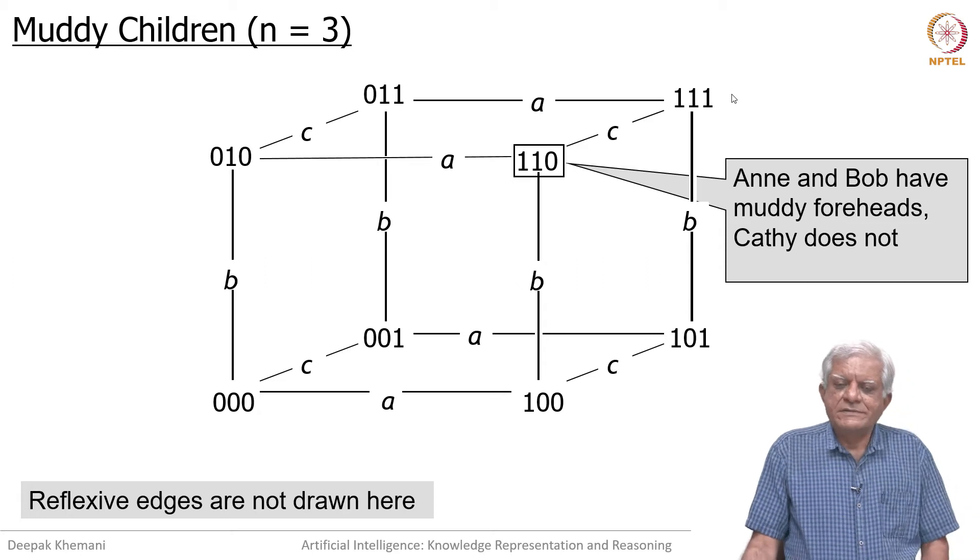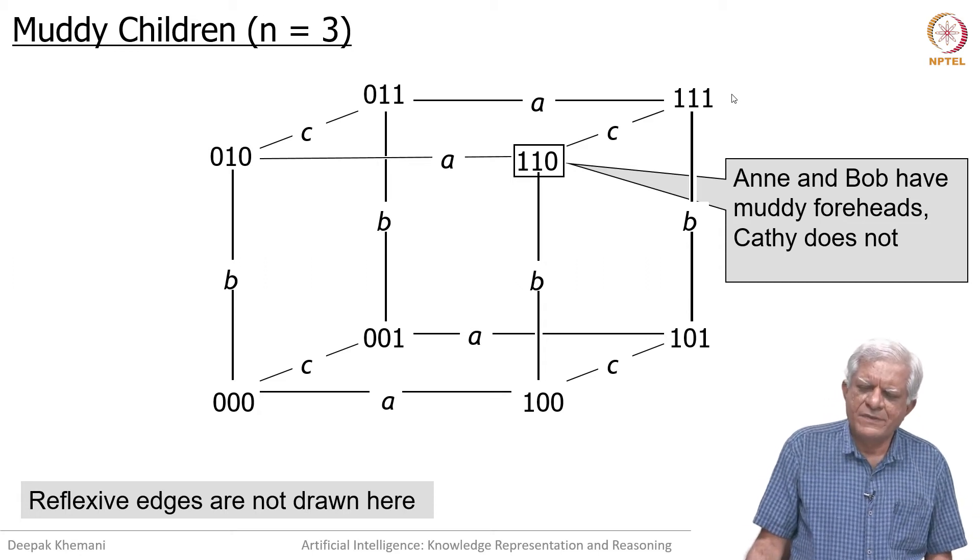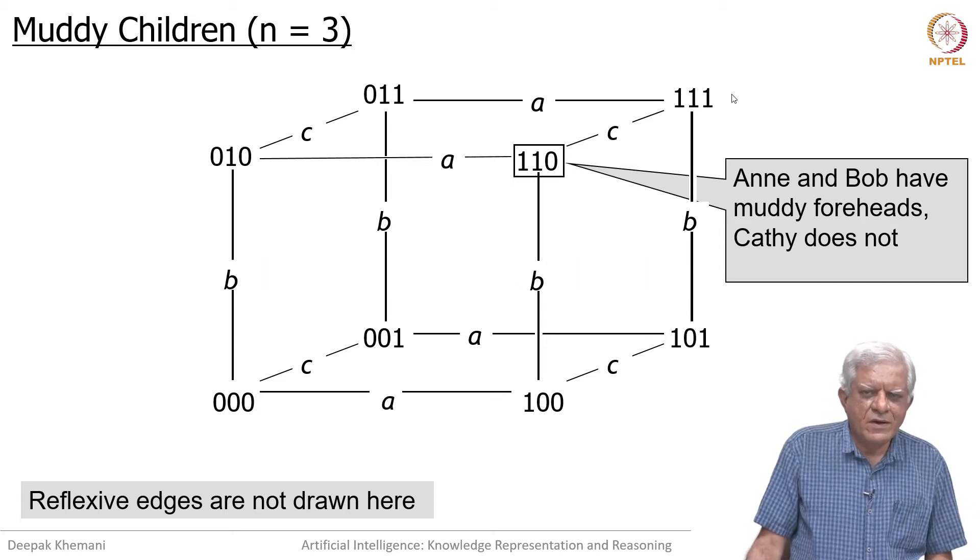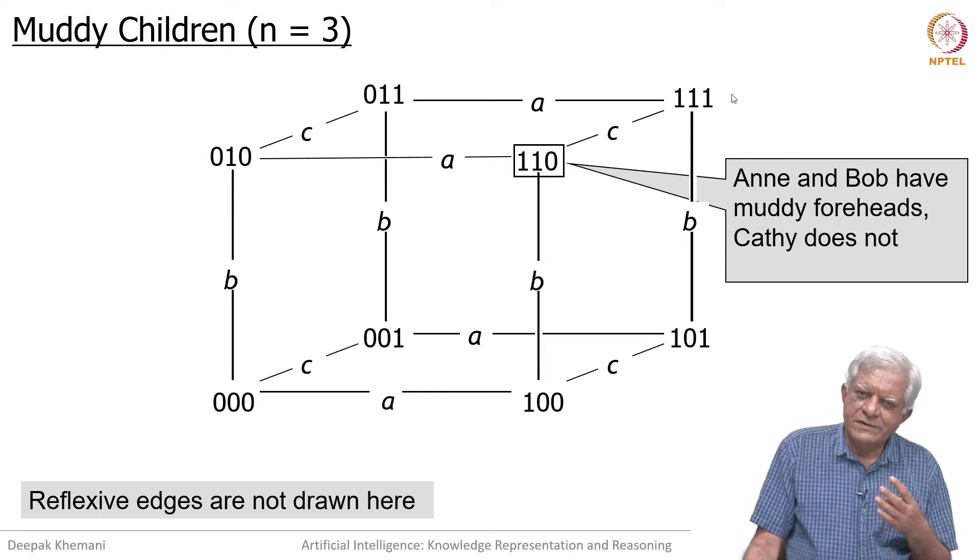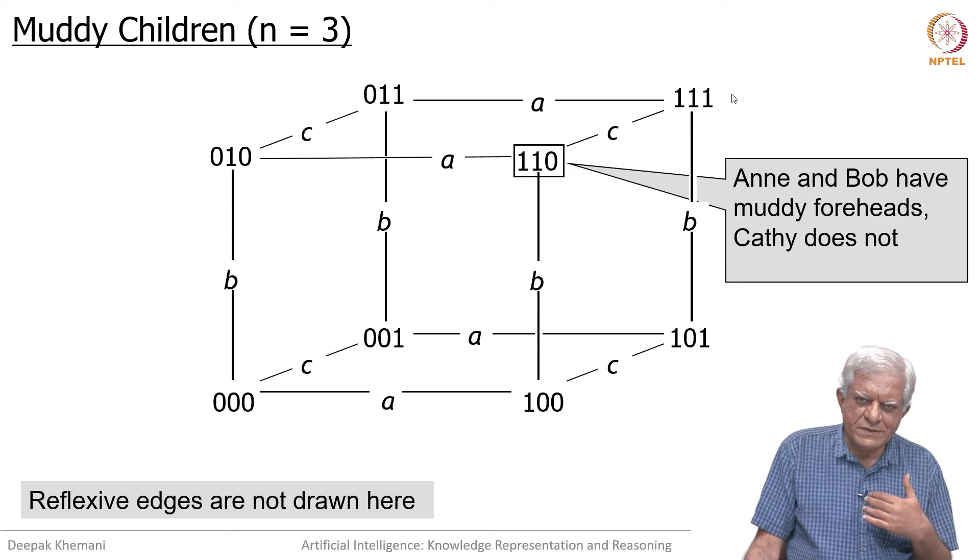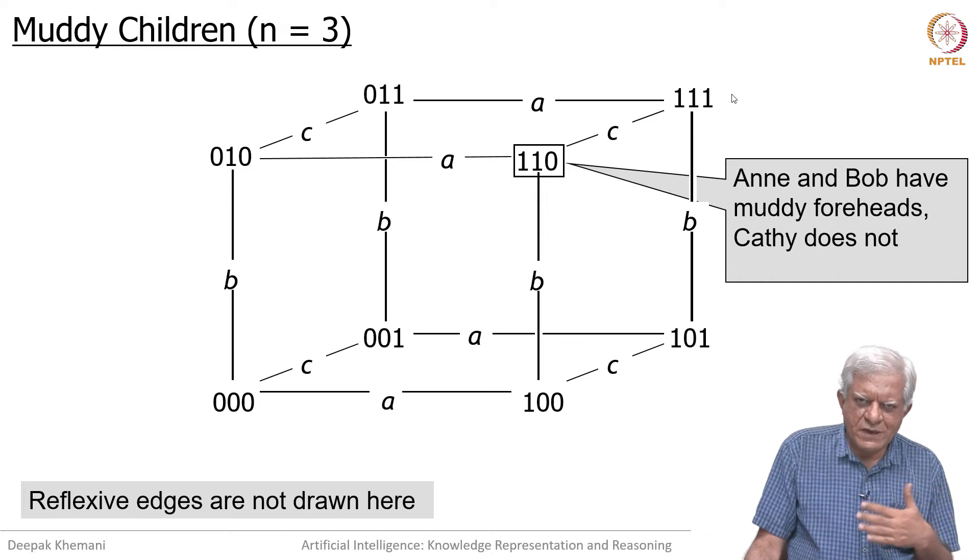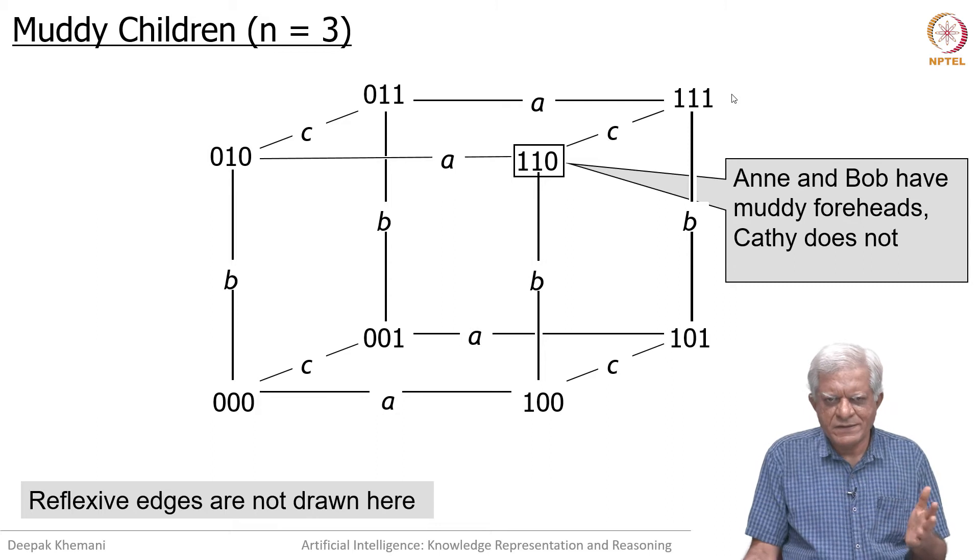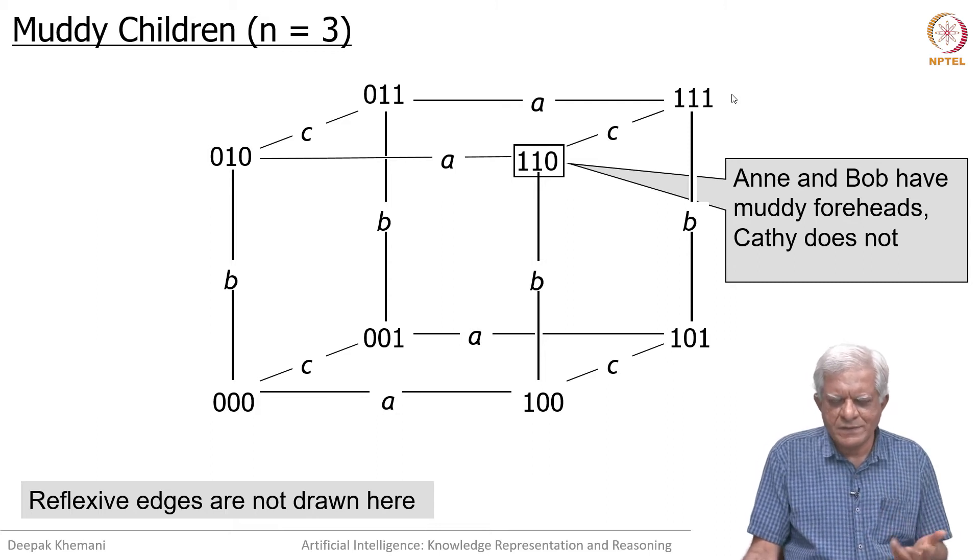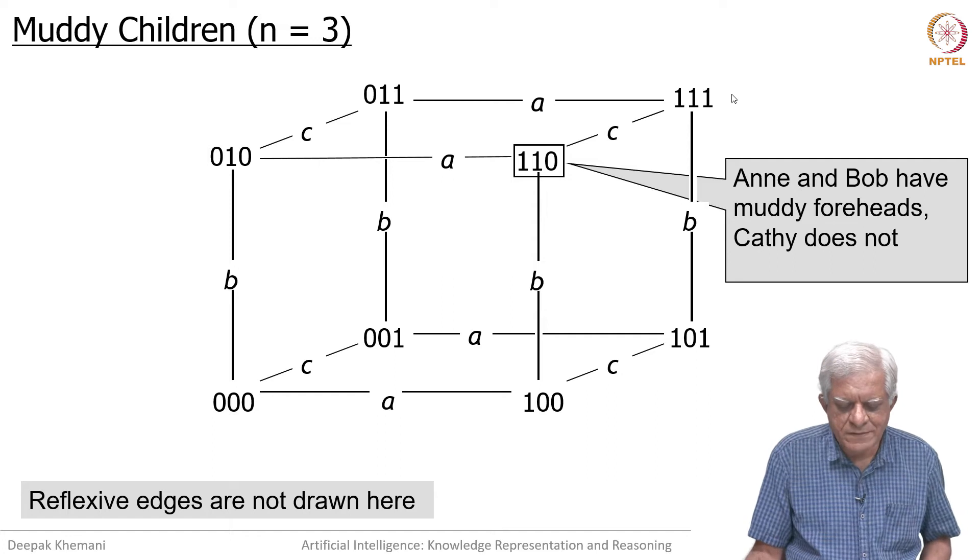Welcome back. We have been looking at how cryptic structures can be pruned when you get more information. This information can either come through public announcements as we saw, or it could come through individual actions as well. Actions like raising a hand is equivalent to saying yes, which is also like a public announcement. So we are talking about public announcements here.